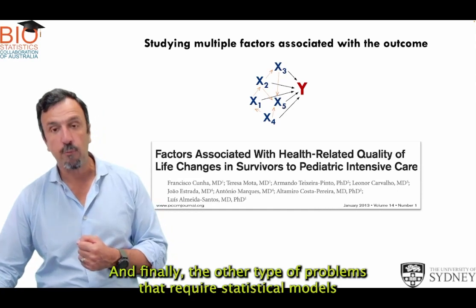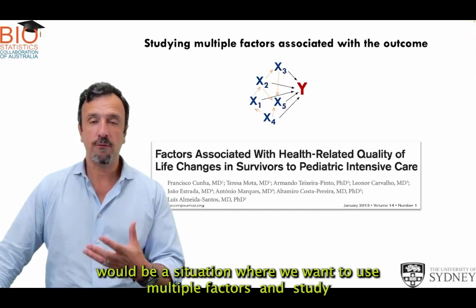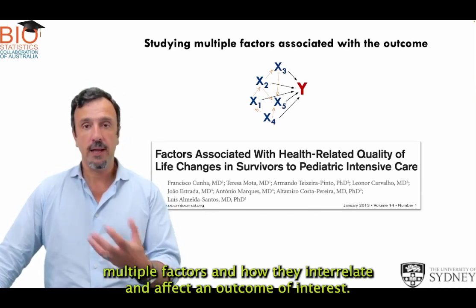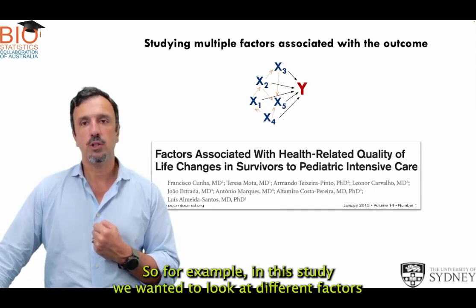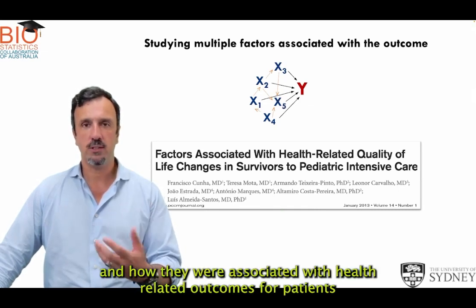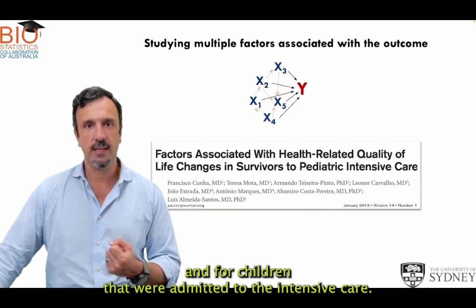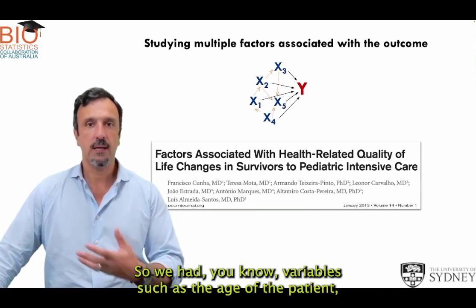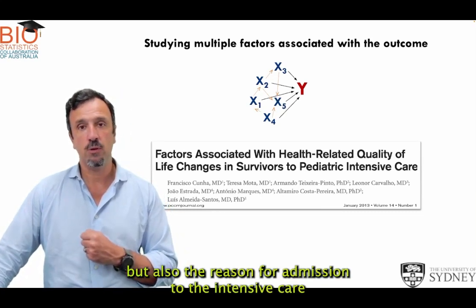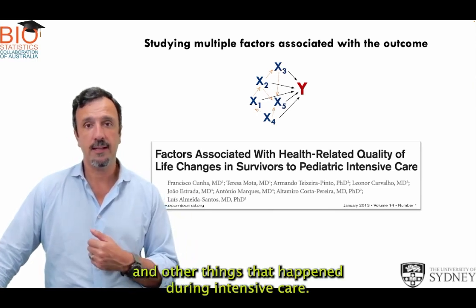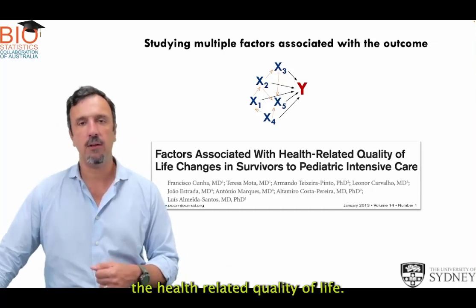Finally, another type of problem requiring a statistical model is when we want to study multiple factors and how they interrelate and affect an outcome of interest. For example, in one study we looked at different factors associated with health-related outcomes for children admitted to pediatric intensive care — including patient age, reason for admission, and events during intensive care — and how all these factors affected health-related quality of life.